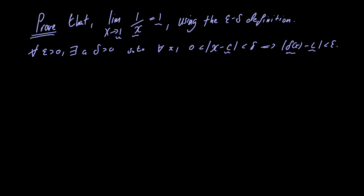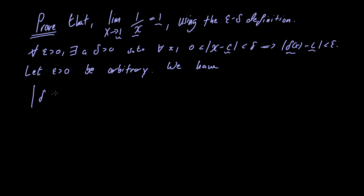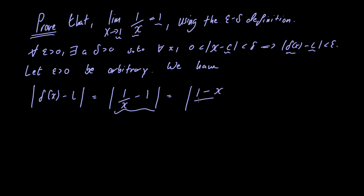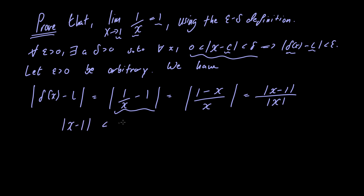Let epsilon be greater than 0 be arbitrary. We have the absolute value of f of x minus L is equal to the absolute value of 1 over x minus 1. Simplifying inside the absolute value, we get the absolute value of 1 minus x divided by x, which equals the absolute value of x minus 1 divided by the absolute value of x. From the definition, we know the absolute value of x minus 1 is less than delta.